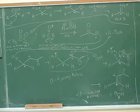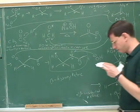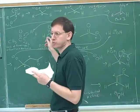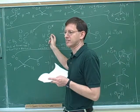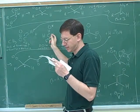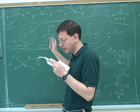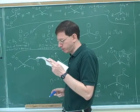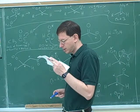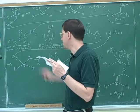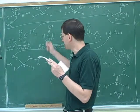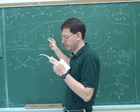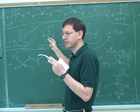Crossed aldol condensations are most successful if one of the reactants has no alpha hydrogen and therefore cannot form an enolate. We also reminded ourselves that alpha hydrogens are not the same thing as aldehyde hydrogens — it's not the aldehyde hydrogens that get deprotonated. And the same reactant should have the more reactive carbonyl group, which would namely make it an aldehyde — that was a mistake in the instructor's lecture notes.